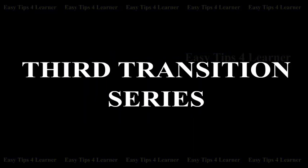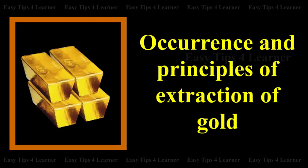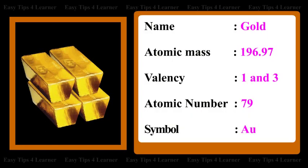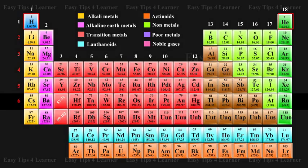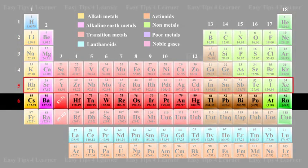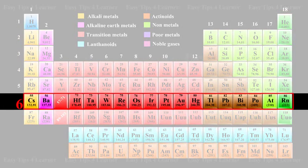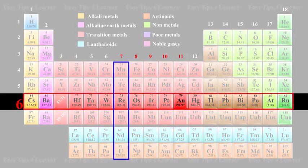3rd Transition Series: Occurrence and Principles of Extraction of Gold. Atomic mass 196.97, valency 1 and 3, atomic number 79, symbol Au. Position in the periodic table: Period Number 6 and Group Number 11.